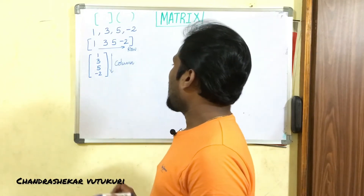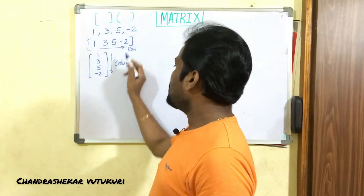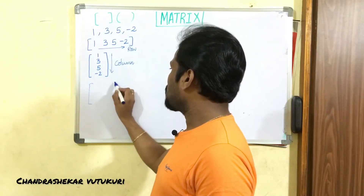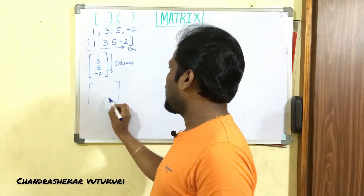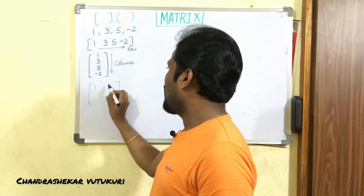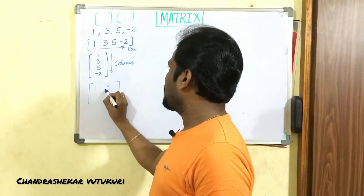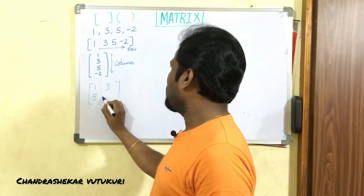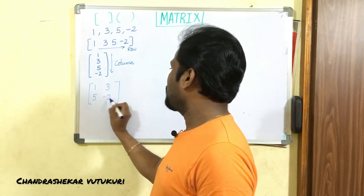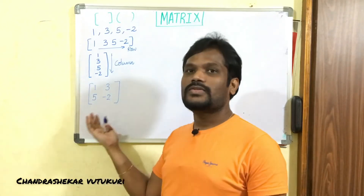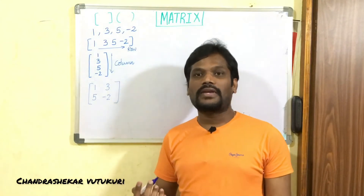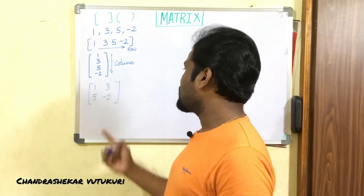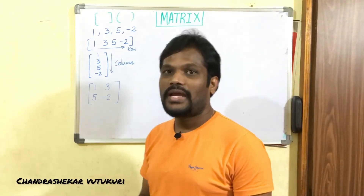I can also arrange these four numbers in a 2×2 fashion: 1, 3 in the first row and 5, -2 in the second row. This is also a matrix and it is called a square matrix.